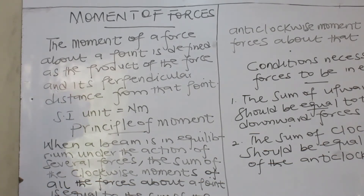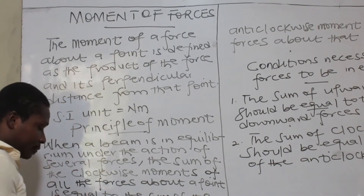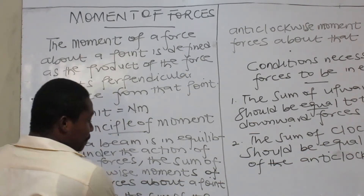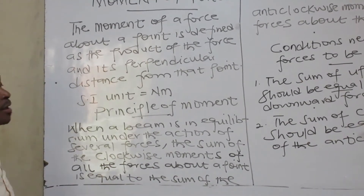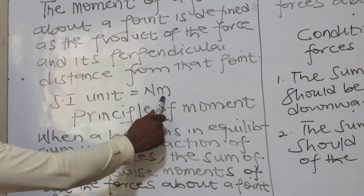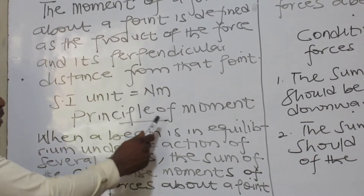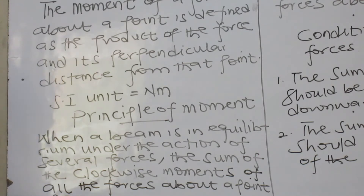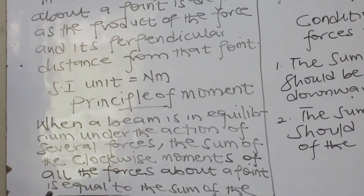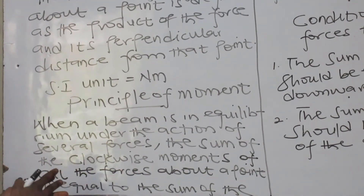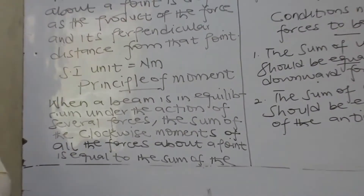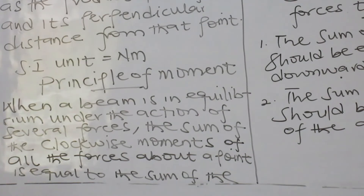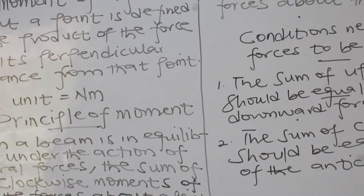That is what we call moment of forces. The SI unit for moment is Newton-meter — force is in Newtons and distance is in meters. The principle of moment states that when a beam is in equilibrium under the action of several forces, the sum of the clockwise moments of all the forces about a point is equal to the sum of the anticlockwise moments of all the forces about that point.